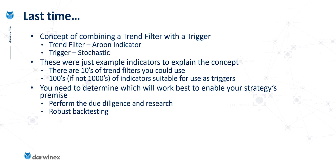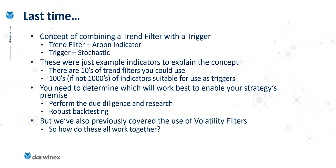To do this you're probably going to have to undertake some research, and following that due diligence process you'll then robustly back test your system to ensure that those indicators work in the way that you need them to. Although last time we just considered a trend filter and a trigger, we've also covered the topic of volatility filters. So how do we bring these into the equation and integrate these filters together? That's the topic of today's episode.